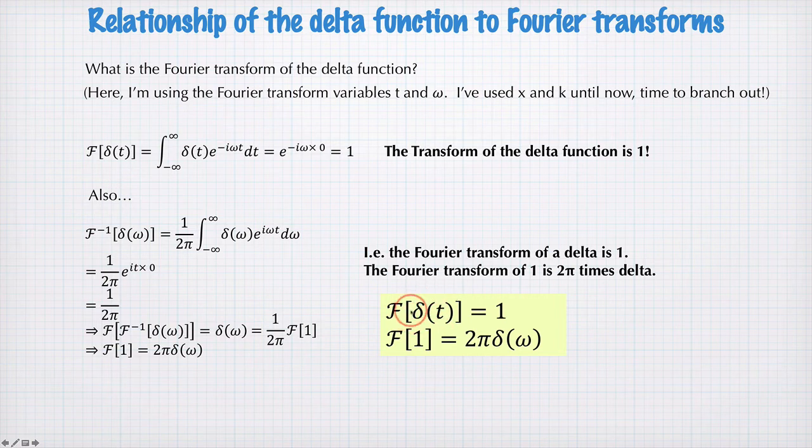A delta function is infinitely narrow in time. And its Fourier transform is a constant, which means we have all the frequencies. Every frequency has the same amplitude in the Fourier transform. So there's an infinite number of frequencies all the way up to omega equals infinity to make up this infinitely narrow spike.